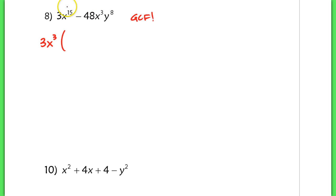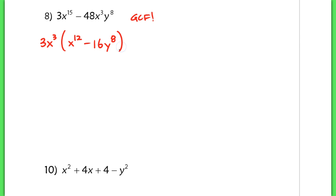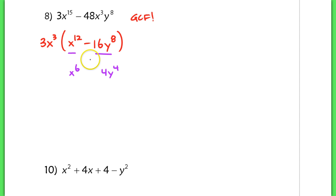In the first term I'd be left with x to the 12th, and in the second term I'd be left with negative 16y to the 8th. Now if I look at the terms on the inside, these are both perfect squares. If I were to square x to the 6th, I'd get x to the 12th, and if I were to square 4y to the 4th, I'd get 16y to the 8th.